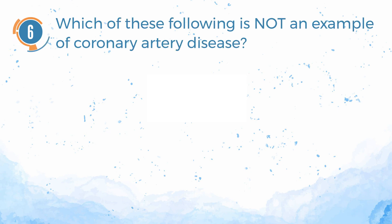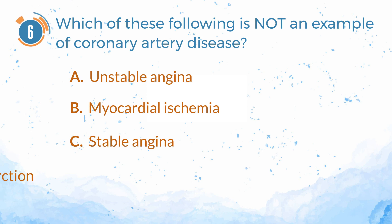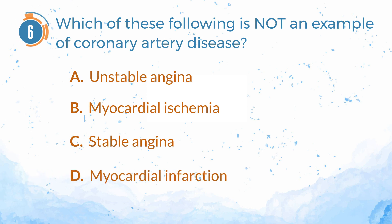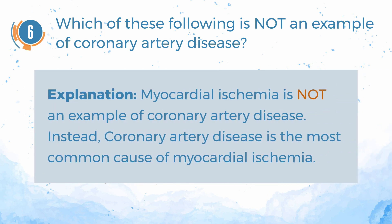Number 6. Which of the following is not an example of coronary artery disease? A. Unstable angina. B. Myocardial ischemia. C. Stable angina. D. Myocardial infarction. The answer is B. Myocardial ischemia. Explanation: myocardial ischemia is not an example of coronary artery disease; instead, coronary artery disease is the most common cause of myocardial ischemia.